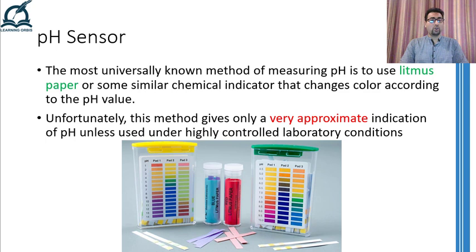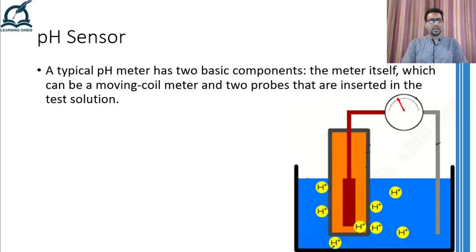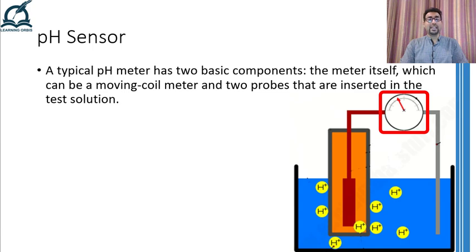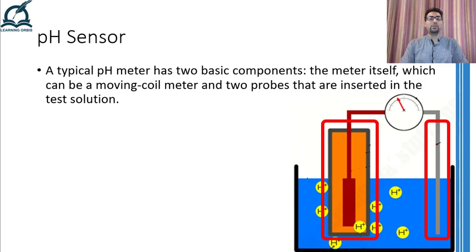Therefore, we have to resort to some other more accurate and automatic method for measuring the pH if we want to get this measurement in an industrial environment. A typical pH meter has two basic components: the meter itself, which is basically a galvanometer but has a scale drawn on it so that it shows the pH value, and two special probes that are inserted in the solution whose pH is to be measured.